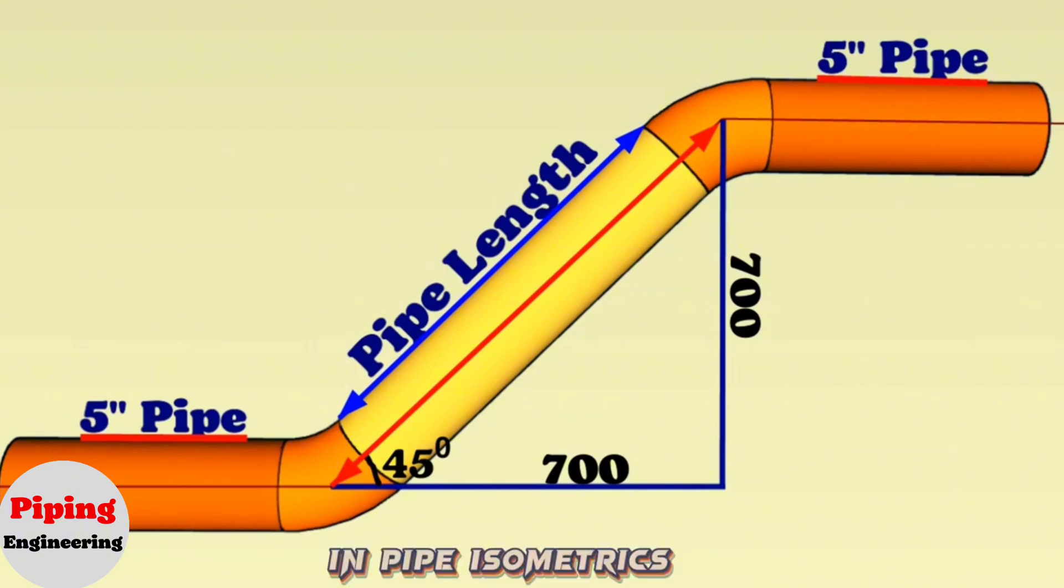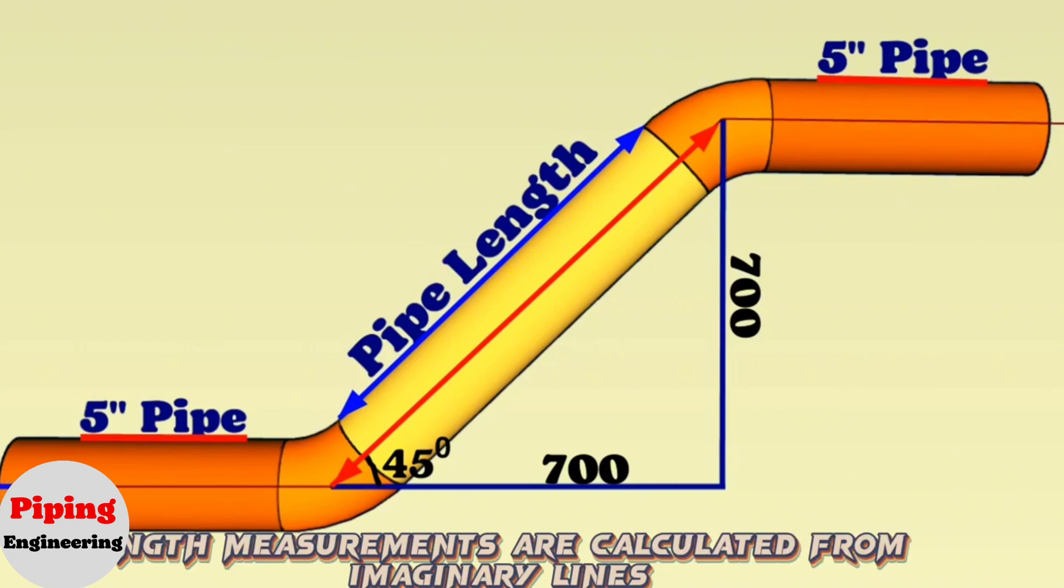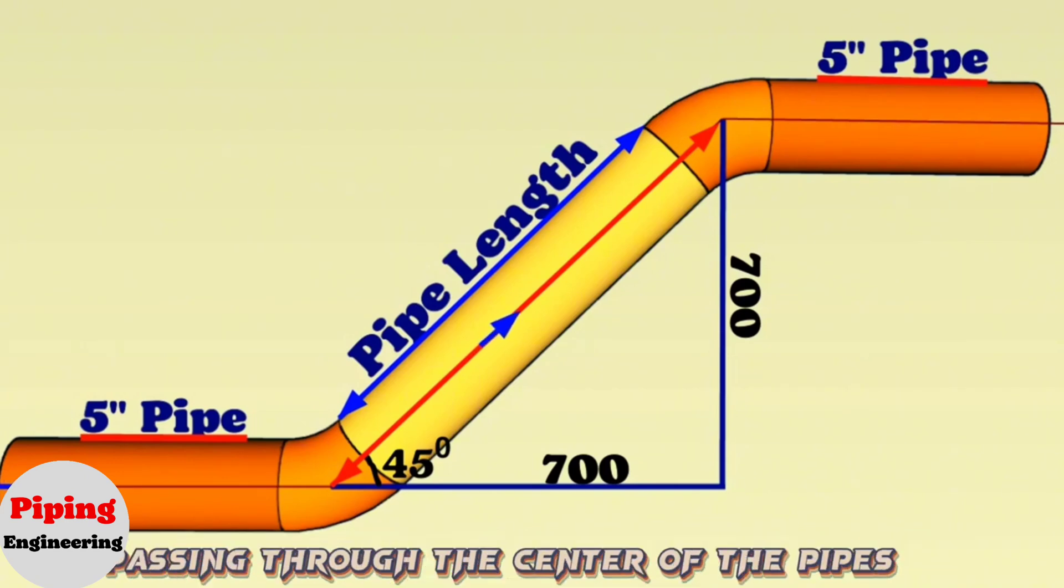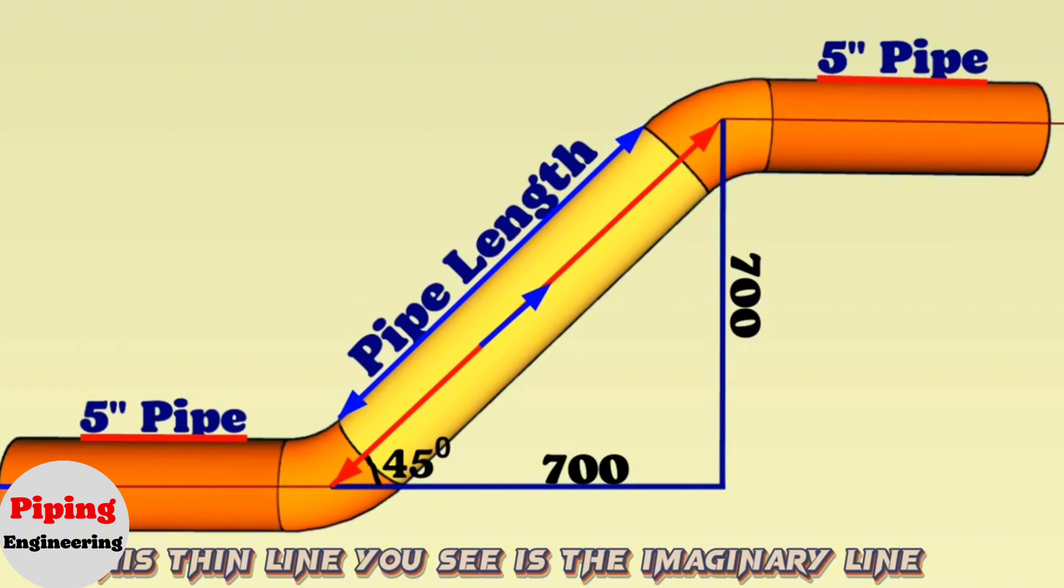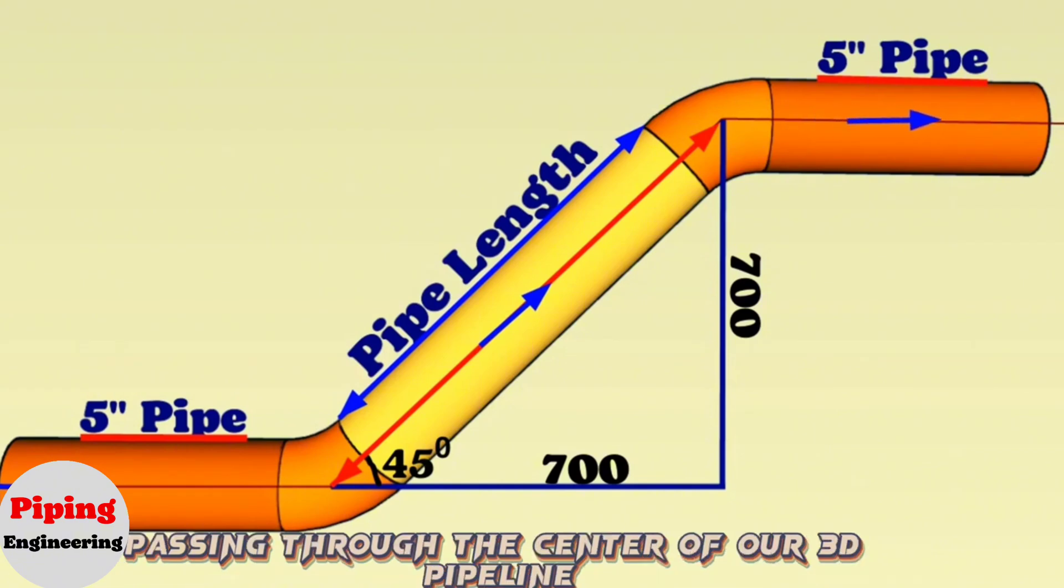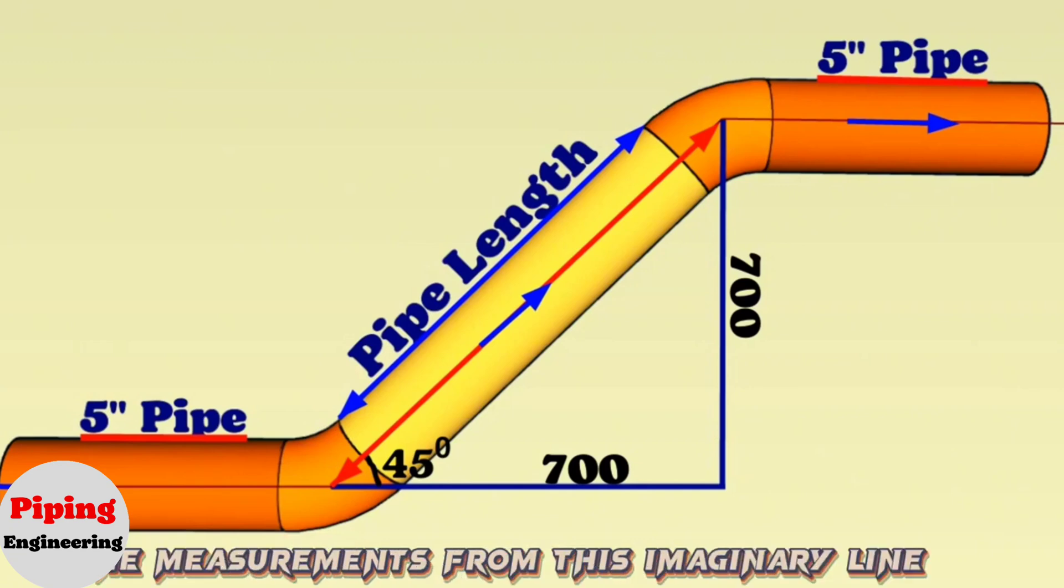In pipe isometrics, length measurements are calculated from imaginary lines passing through the center of the pipes. This thin line you see is the imaginary line passing through the center of our 3D pipeline, and we will calculate the measurements from this imaginary line.